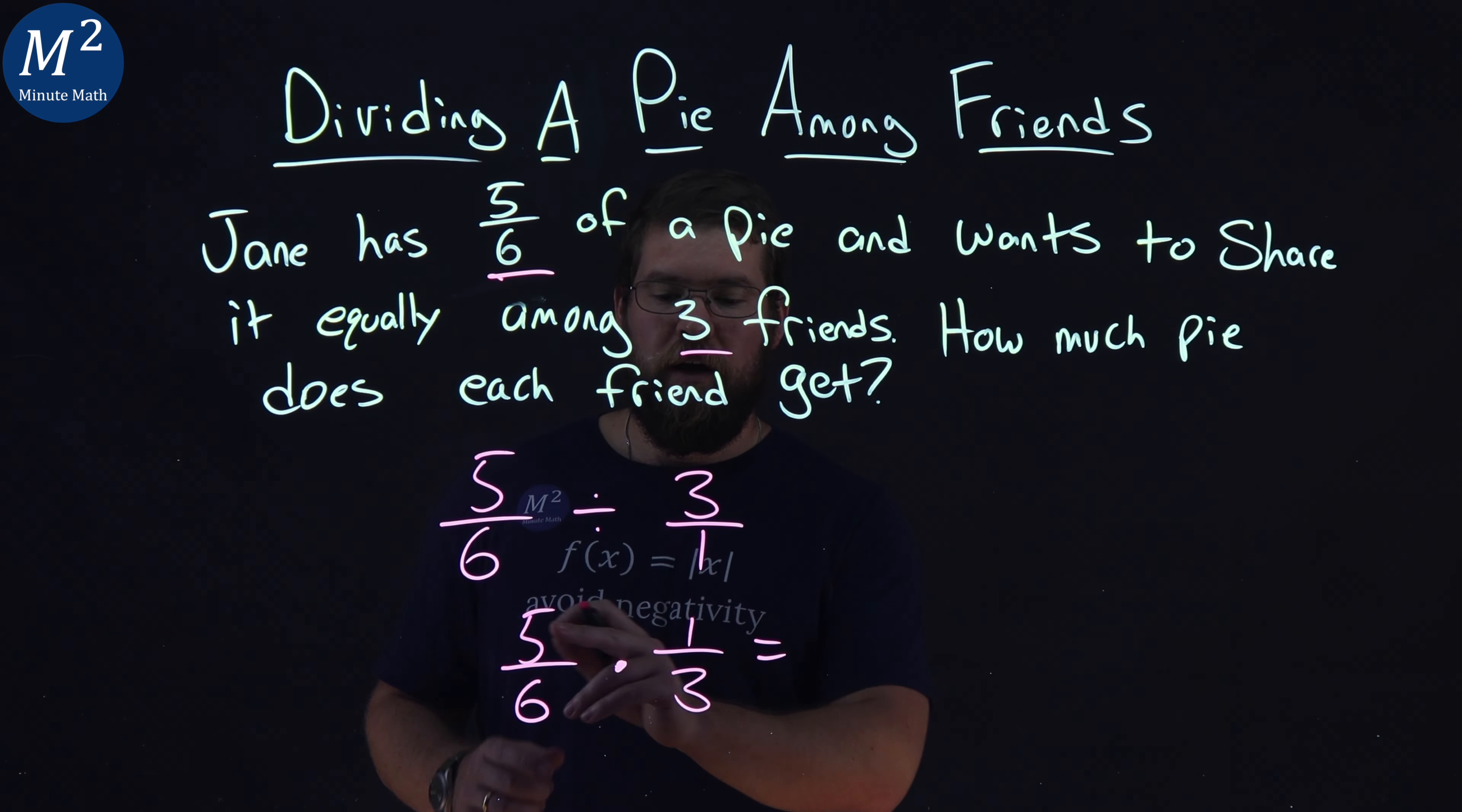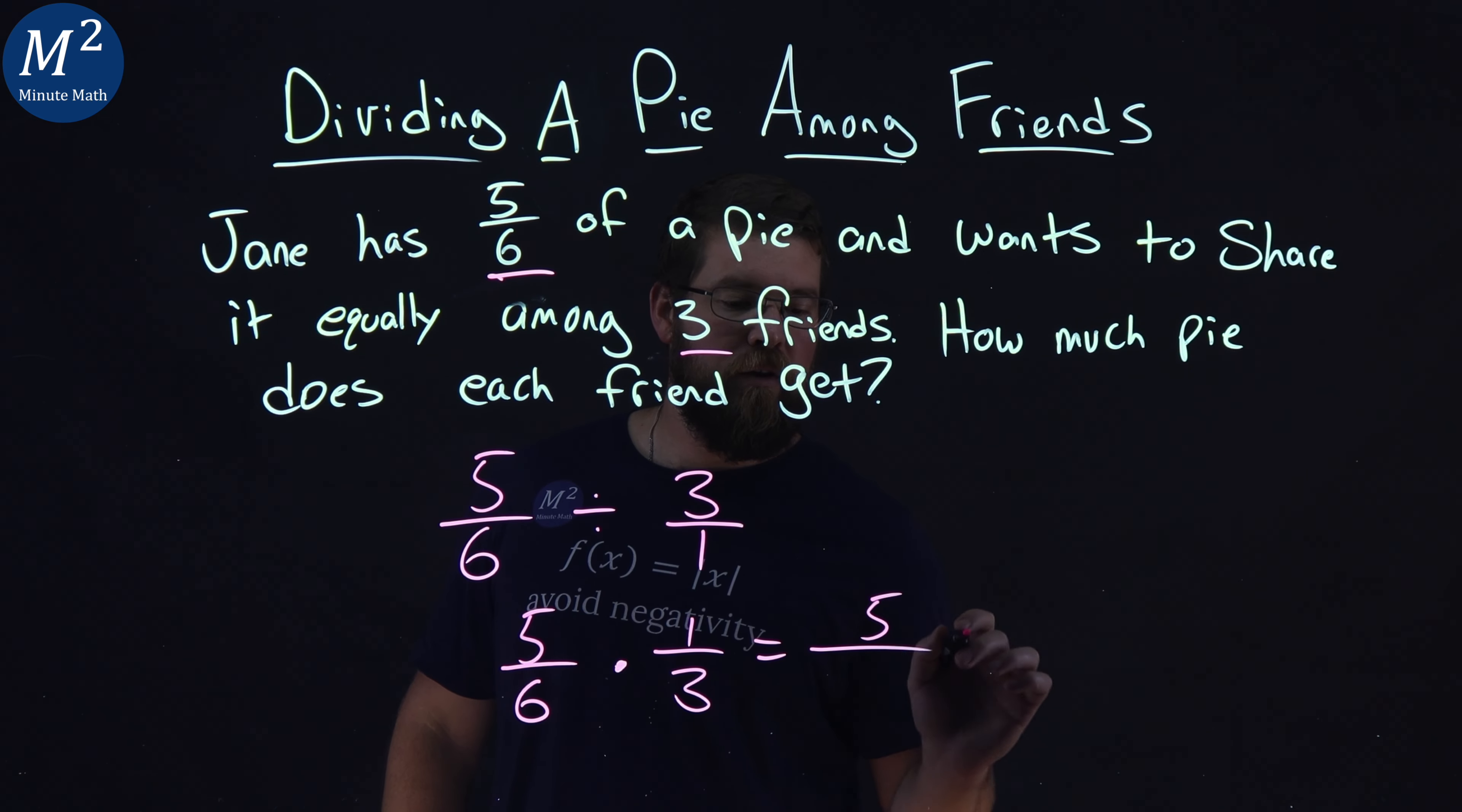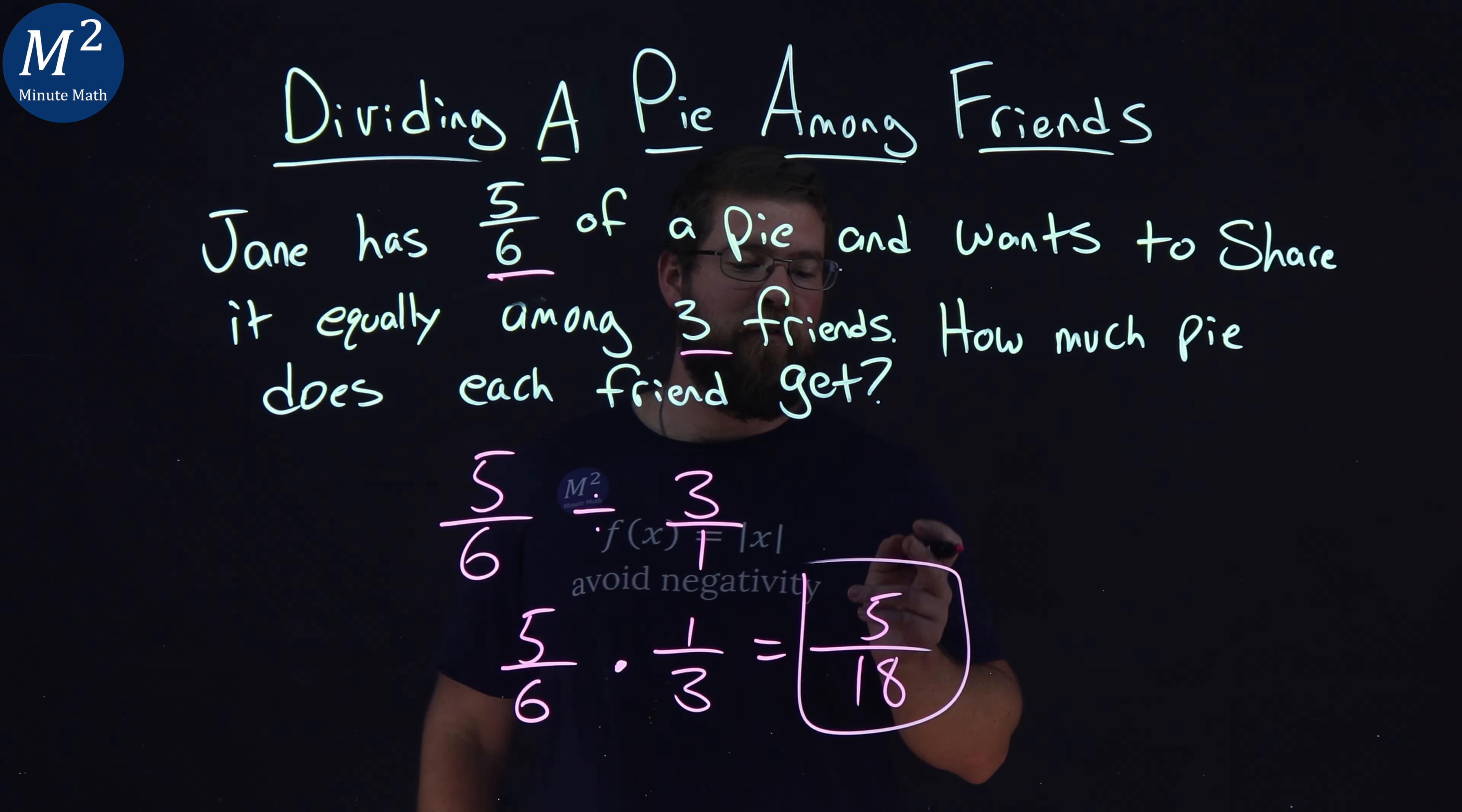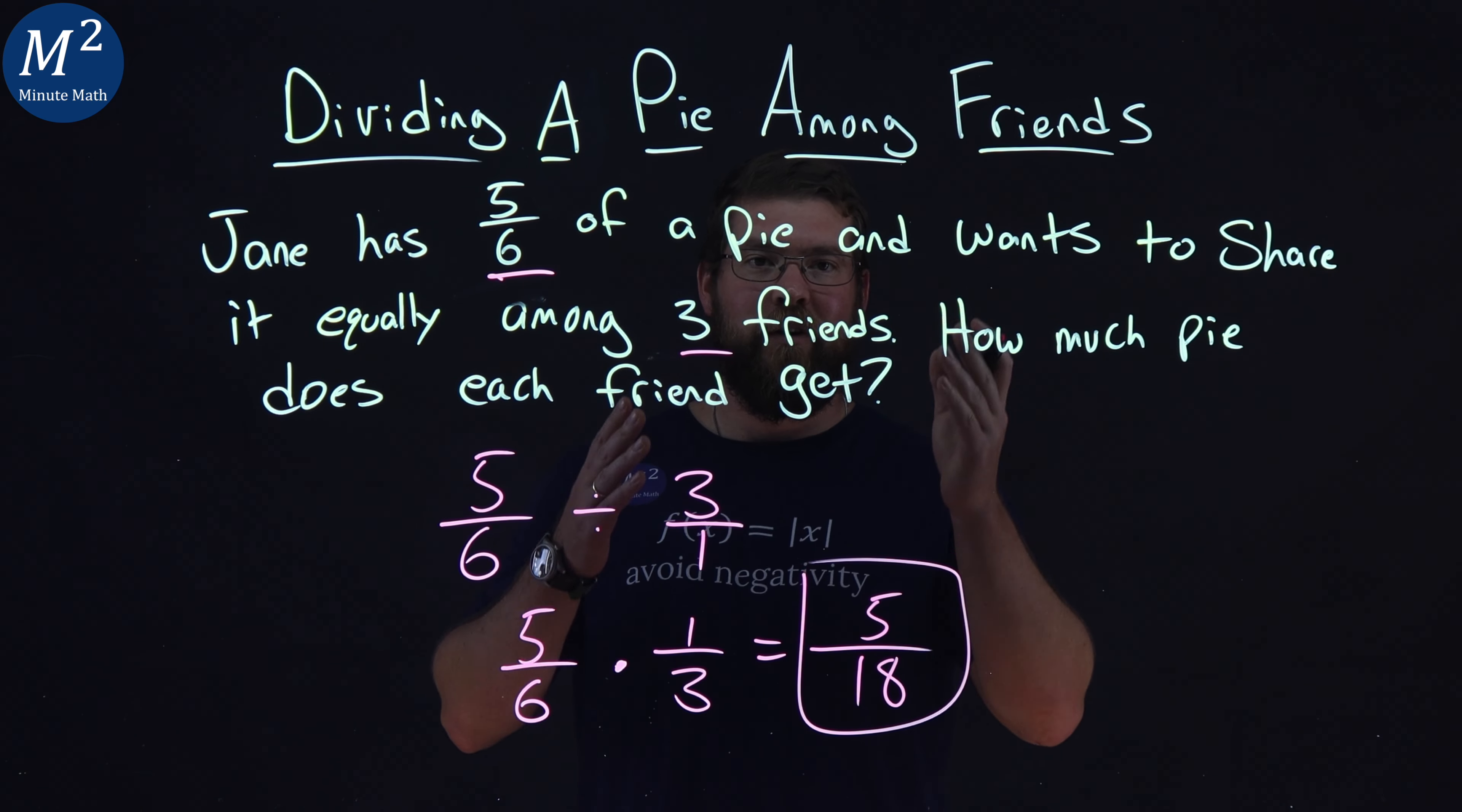Multiply this out here, five times one is five across the numerator, across the denominator, six times three is eighteen. And so each friend gets five-eighteenths of the pie.